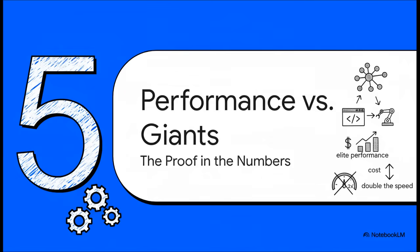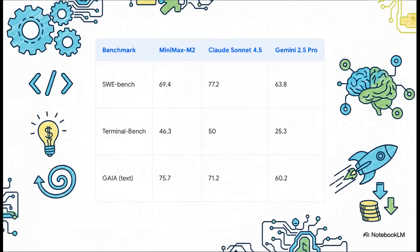The promises sound great, the tech sounds smart — but claims are one thing; the proof is in the pudding. So how does Minimax M2 actually perform head to head with the giants of the industry? Take a look at this. On SWE-bench — a really tough benchmark for real-world software engineering — it pulls a 69.4, putting it right up there with the big, expensive, closed-source models. And for general agent capabilities on the GAIA benchmark, it's hitting a super impressive 75.7.